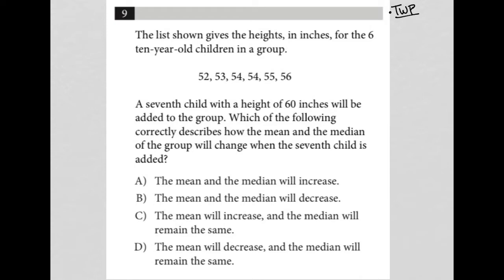All right, so we see those six heights provided here. A seventh child with a height of 60 inches will be added to the group. So instead of just keeping that in my mind, I'm going to actually physically write in the 60 into that list.